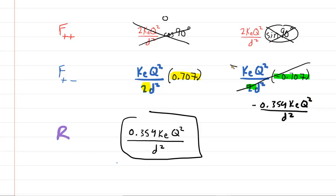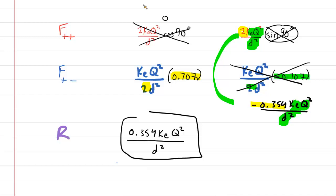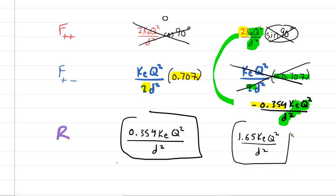Looking at the y components, we have like terms — both are k_e Q²/d². Adding the coefficients: 2 plus (-0.354) gives about 1.65. So the total y component of the net force is 1.65 k_e Q²/d². Those are the symbolic expressions for the total x component and total y component of the net force.